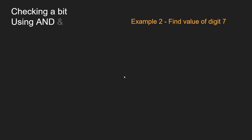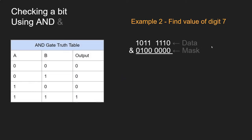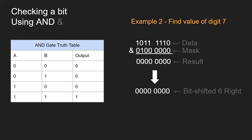Let's show the other example: we're going to find the value of digit 7. Counting from the right — 1, 2, 3, 4, 5, 6, 7 — you can see digit 7 is a 0. So when we run our mask over it, the result should show 0 for that digit, and the whole result should be 0. To check it, you'd bit shift 6 places to the right, and then perform some logic on the rightmost digit for true or false. That's checking a bit using AND.